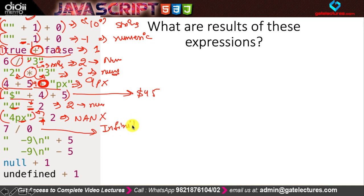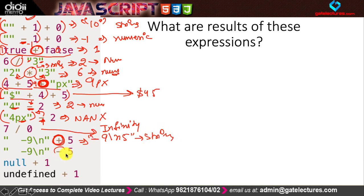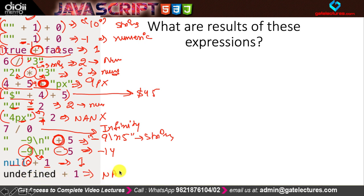'-9\n' + 5: because of '+', this entire becomes a string, giving '-9\n5'. '-9\n' - 5: subtraction converts to numeric — the newline is trimmed — so -9 - 5 = -14. null + 1: null converts to 0, so the result is 1. undefined + 1: undefined converts to NaN, so the result is NaN.